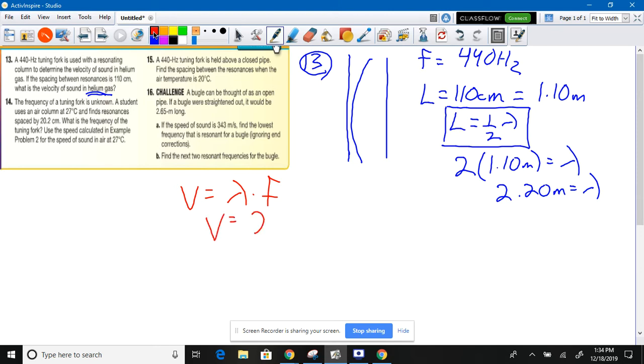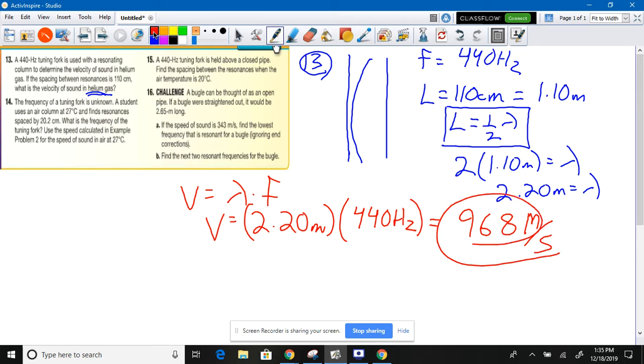So your wavelength is 2.20 meters and your 440 hertz, which is actually, I think, a G note. 440 hertz, I think, is a G note. So what did you guys calculate? 960 hertz, 968 hertz. Rounds up to 969 meters per second. Meters per second. So that's really fast. 969 meters per second.